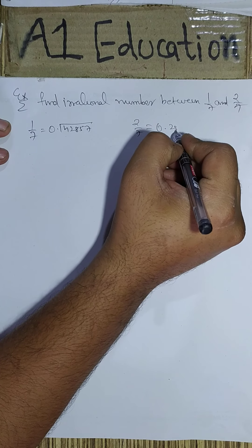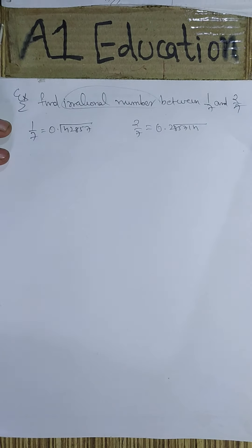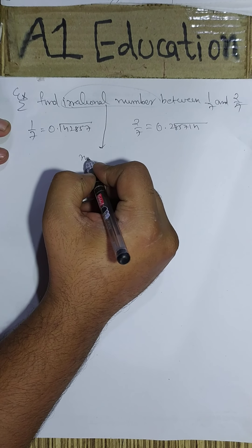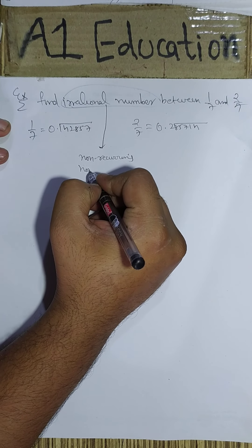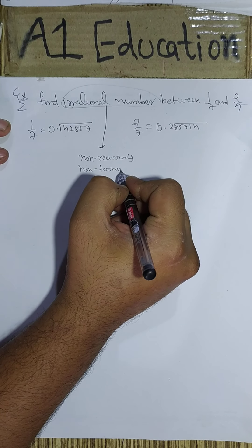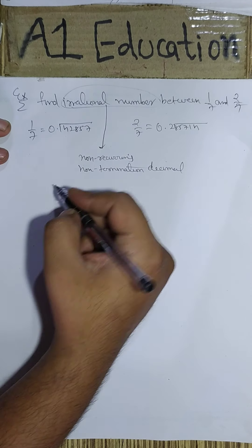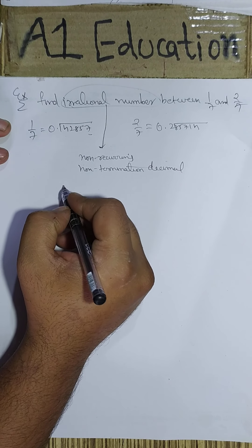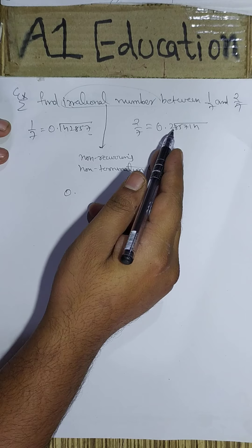We have to identify one irrational number. You must be remembering that irrational number means non-recurring and non-terminating decimal. So from this, we can make any number between these two numbers.